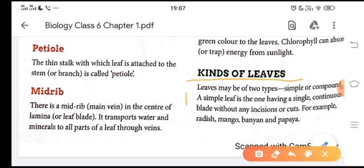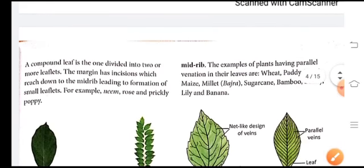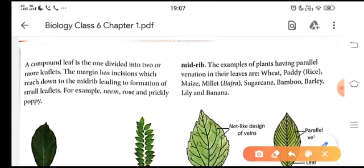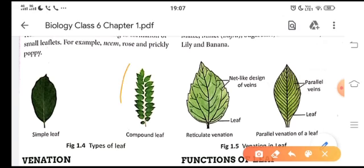For example, radish, mango, papaya, and a common example is the peepal leaf, mango leaf, etc. Number two is the compound leaf. Children, see the diagram. The first diagram is of simple leaf and the second diagram is of a compound leaf.